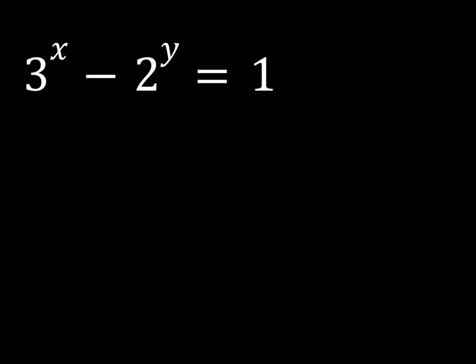We're going to be finding integer solutions for this equation. First of all, we're going to be looking for somewhat obvious solutions. For example, if x equals 1 and y equals 1, then we do get a solution because 3 minus 2 equals 1. So 1 comma 1 is a solution.